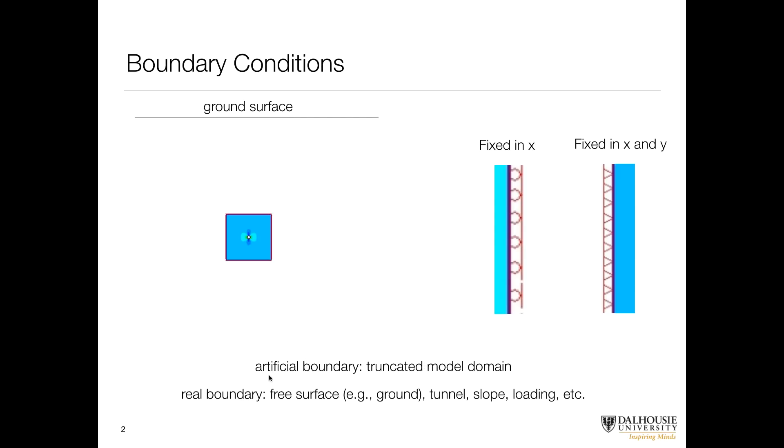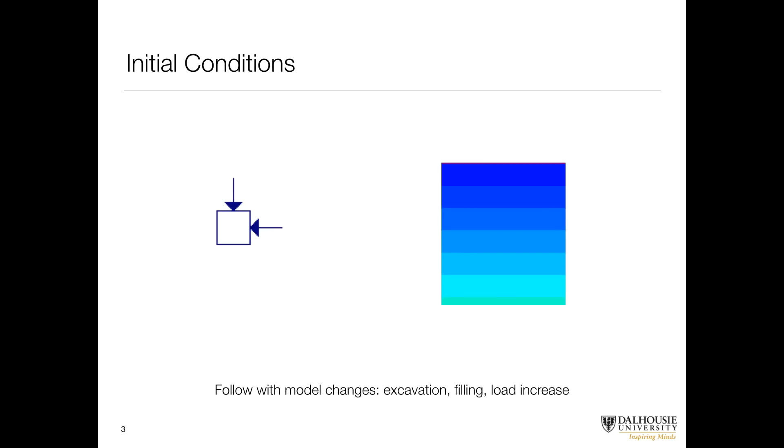Another thing to talk about at this point is the different types of boundaries. So we have artificial boundaries. In this case, we are arbitrarily selecting a boundary, just so that we can constrain the size of our model to something suitable. But there are also real boundaries, such as free surfaces. So the ground surface would be a real boundary. It's a free surface. Another type of real boundary would be the inside of the tunnel. That would be an internal boundary. And it's also a free surface. In addition to that, we might have a foundation with some loading that we want to include, or whatever else.